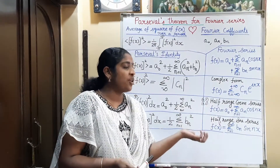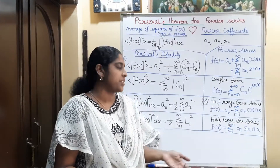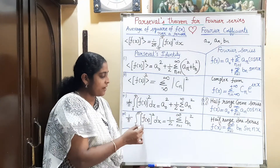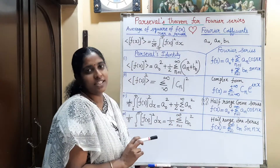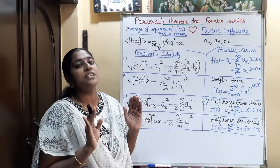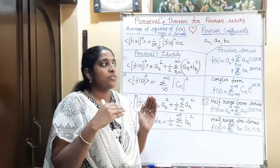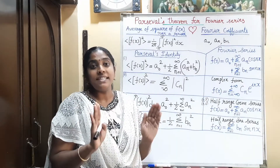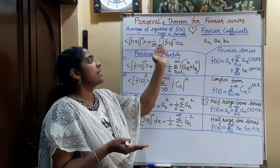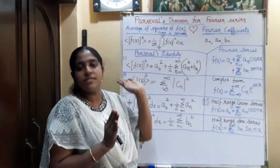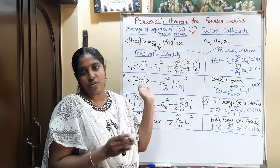For the half-range sine series, there are no a₀ and aₙ terms since it corresponds to an odd function. So Parseval's identity becomes: (1/π)∫₀^π f(x)² dx = (1/2) Σ(n=1 to ∞) bₙ². This Parseval's theorem gives a beautiful relation between the Fourier coefficients and the function, showing how Σ|cₙ|² (from −∞ to +∞) equals the average of the square of the function.